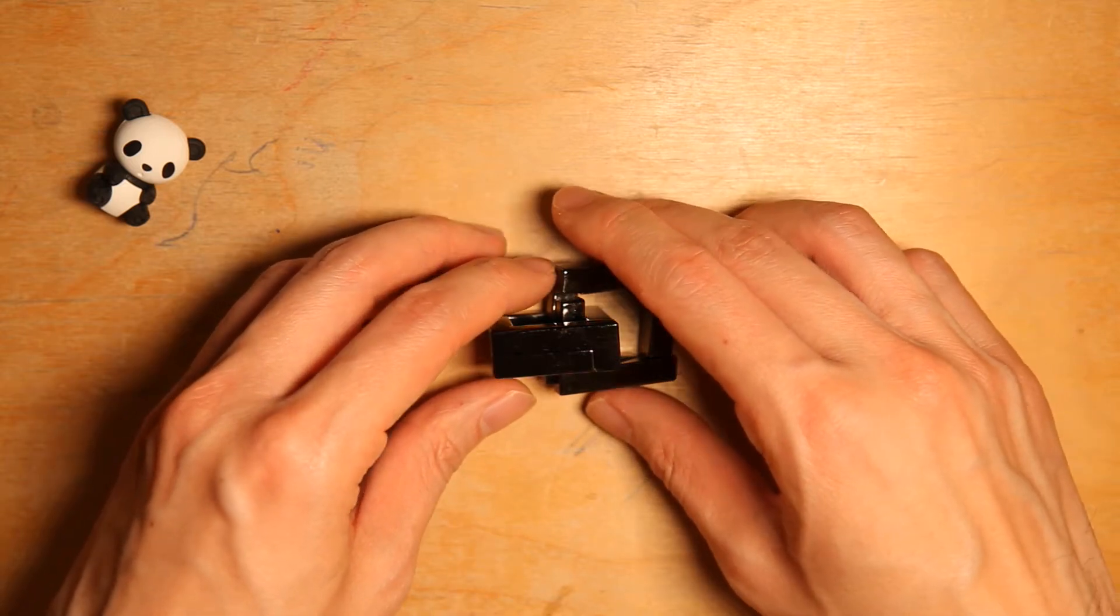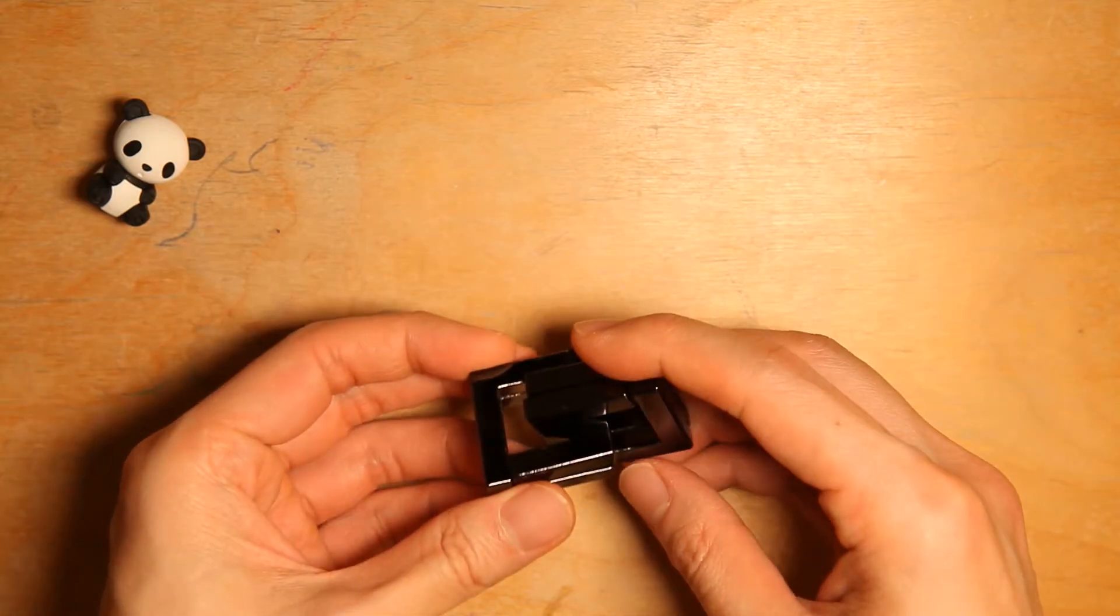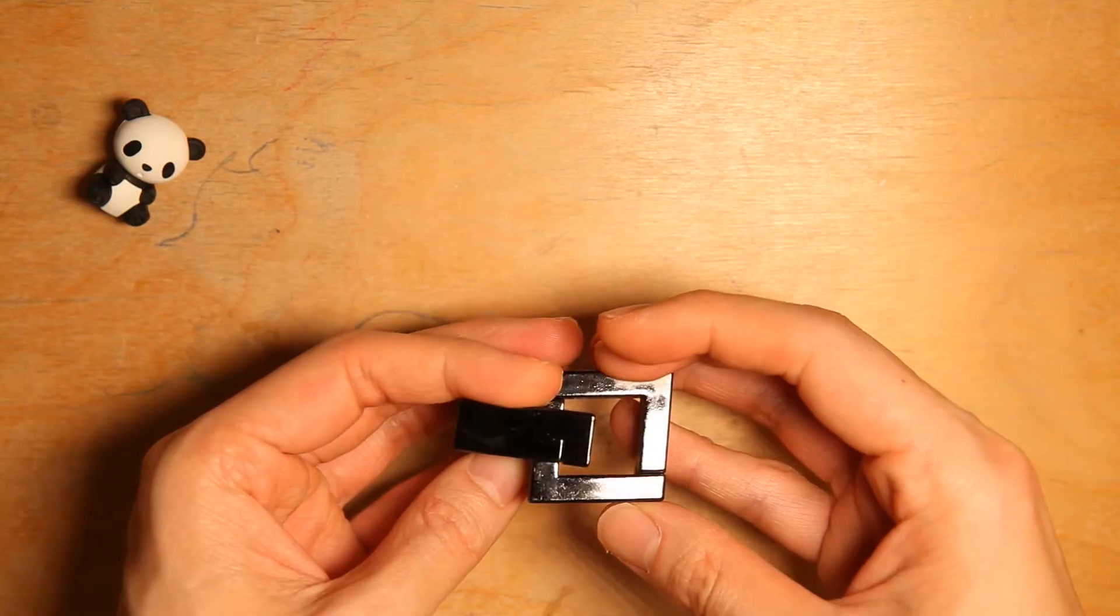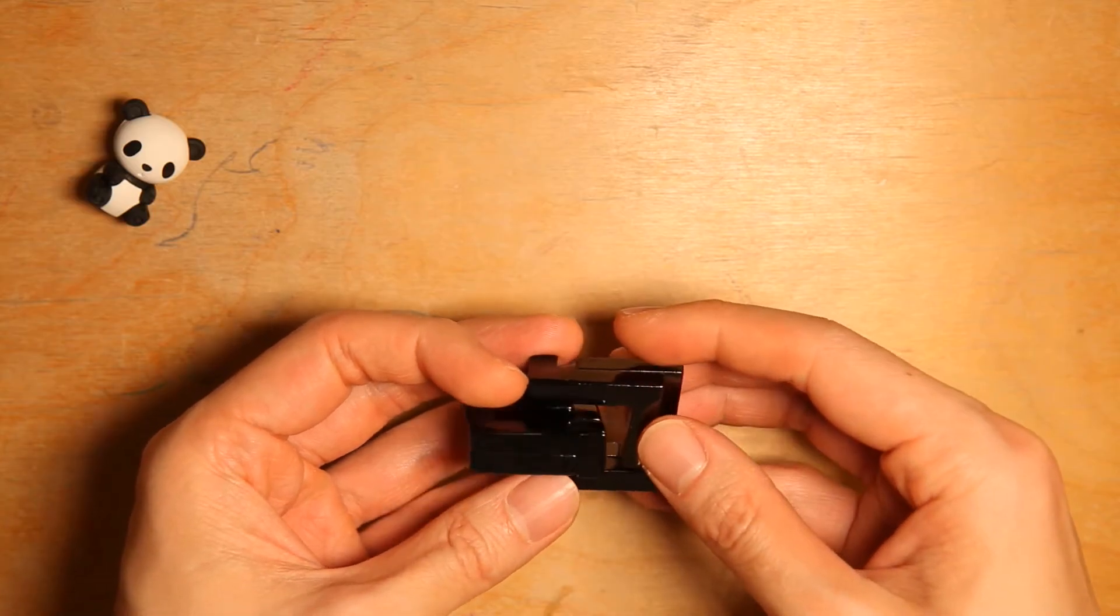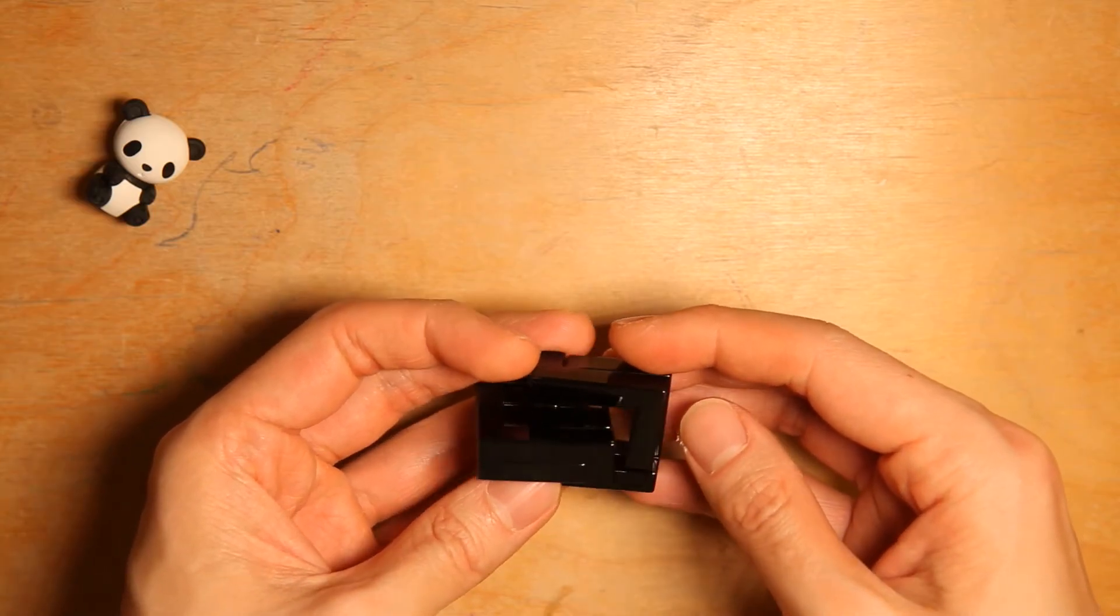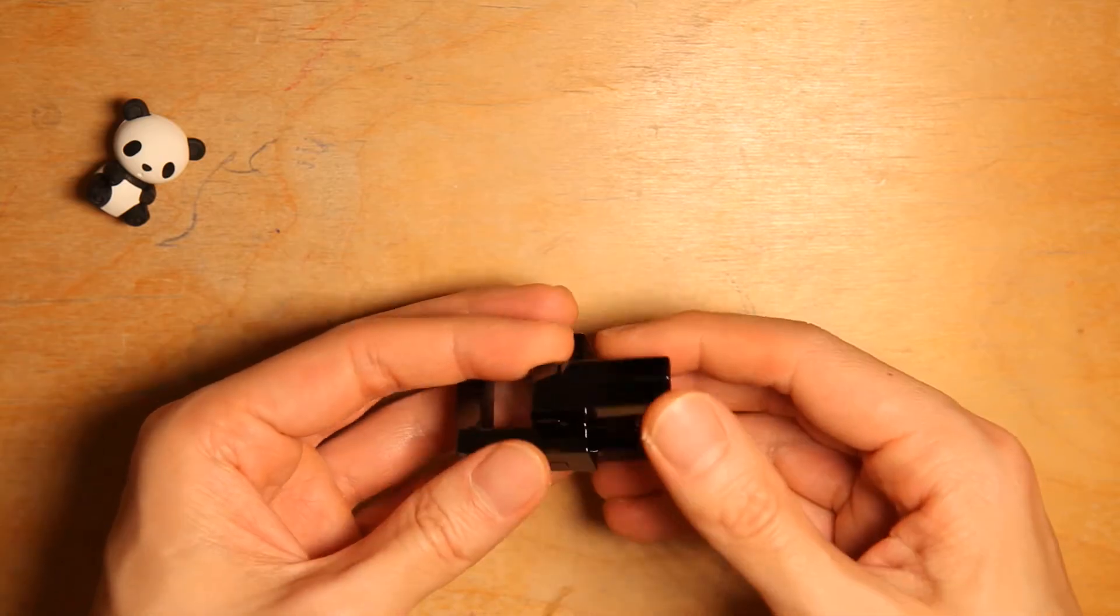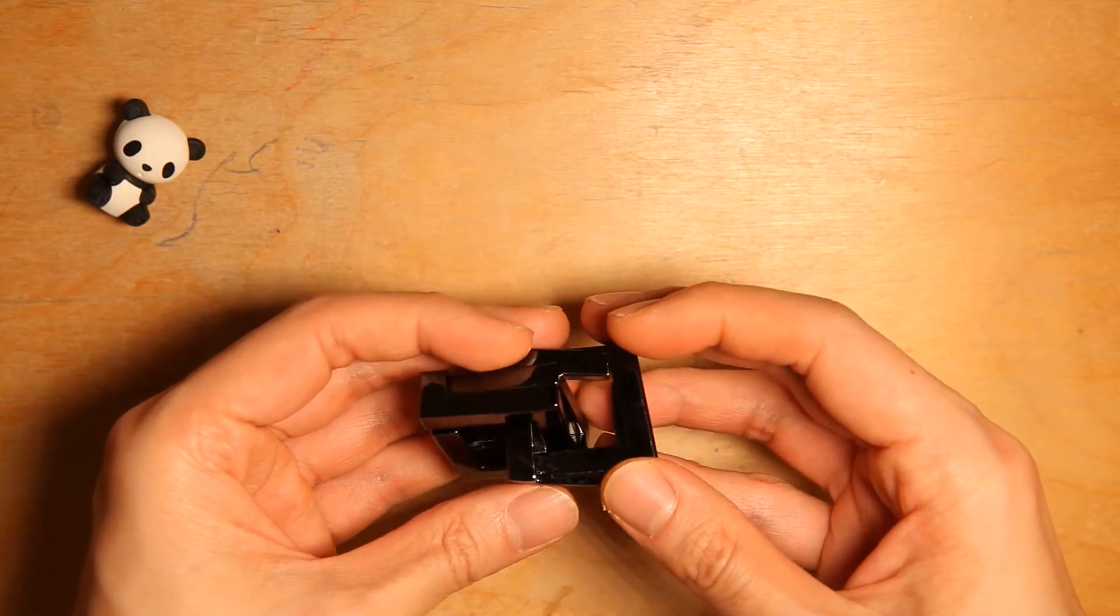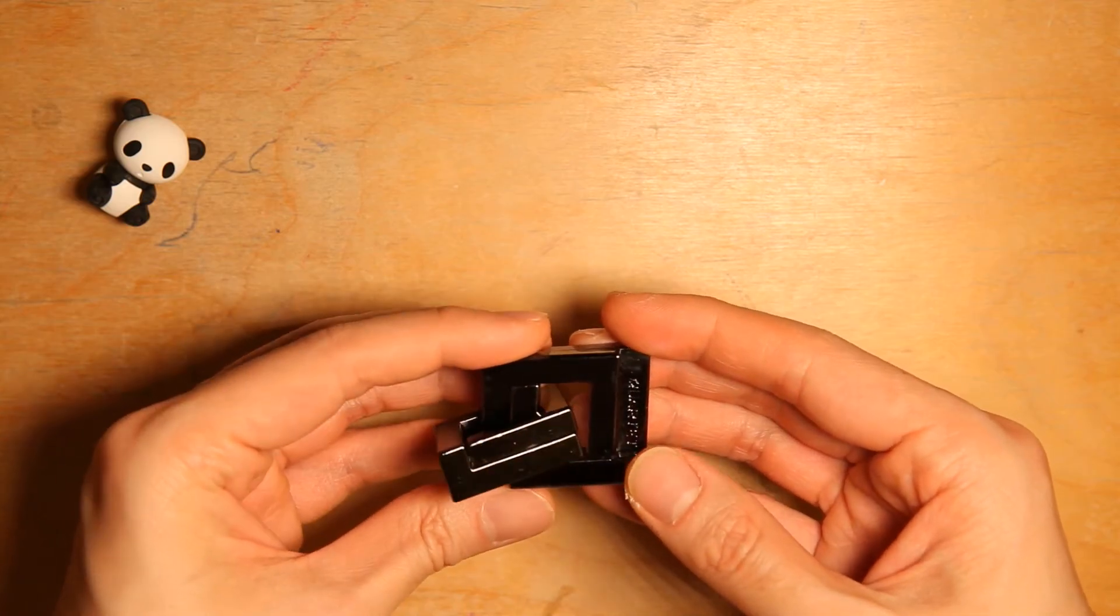So let's get started. First, you have to figure out which pair should be staying stationary and which pair should be moving. For each of the Hanayama puzzles, they will have some etching of the name and Hanayama logo on it.